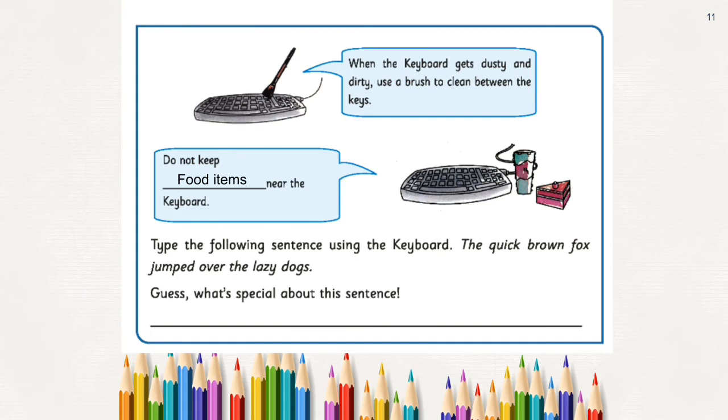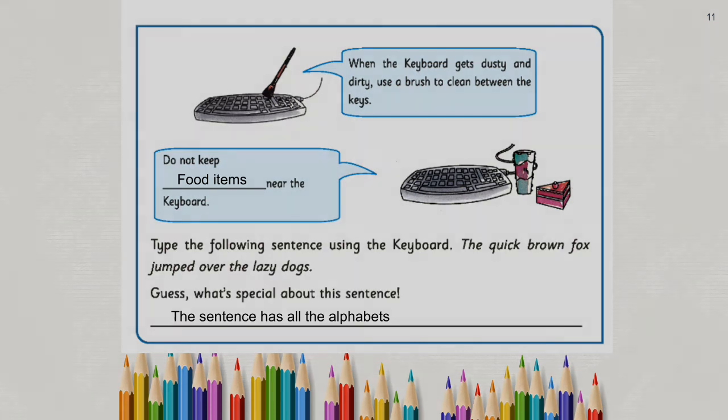The quick brown fox jumped over the lazy dogs. Do you know why this sentence is special? Yes, in this sentence, all the alphabets are covered. The sentence contains all the alphabets.